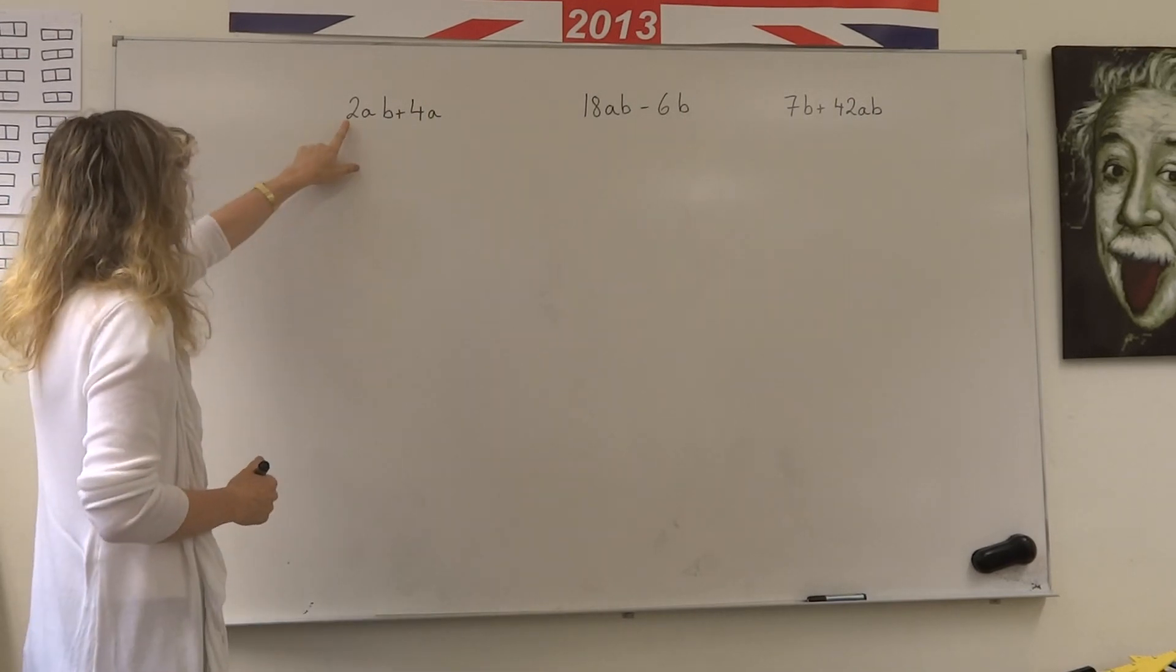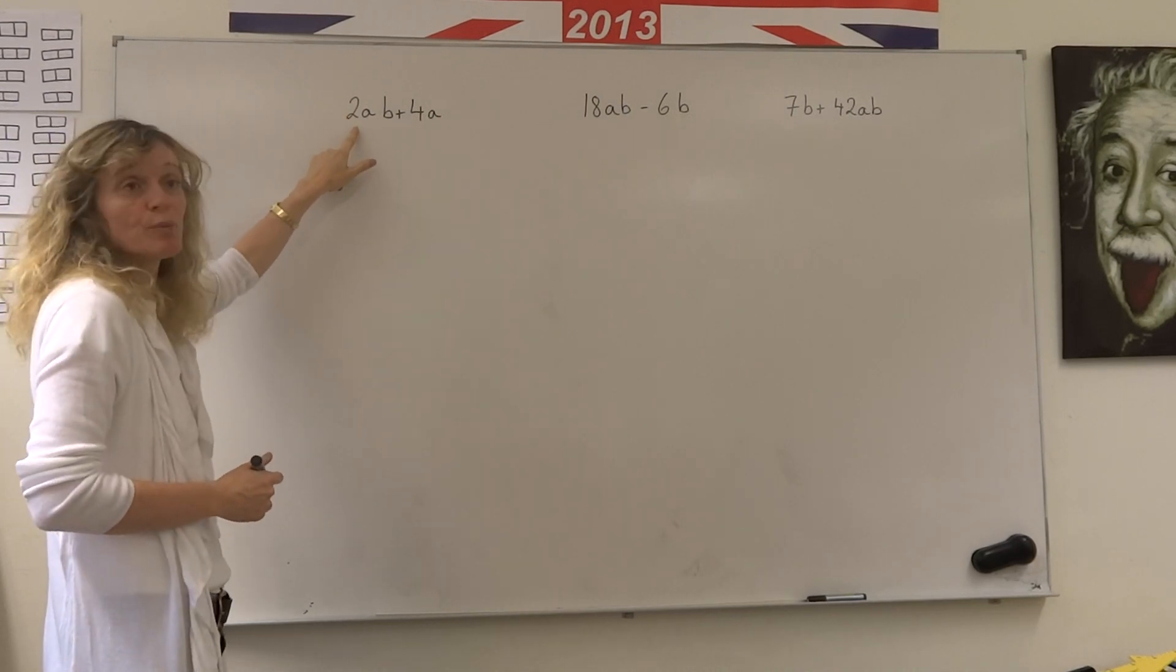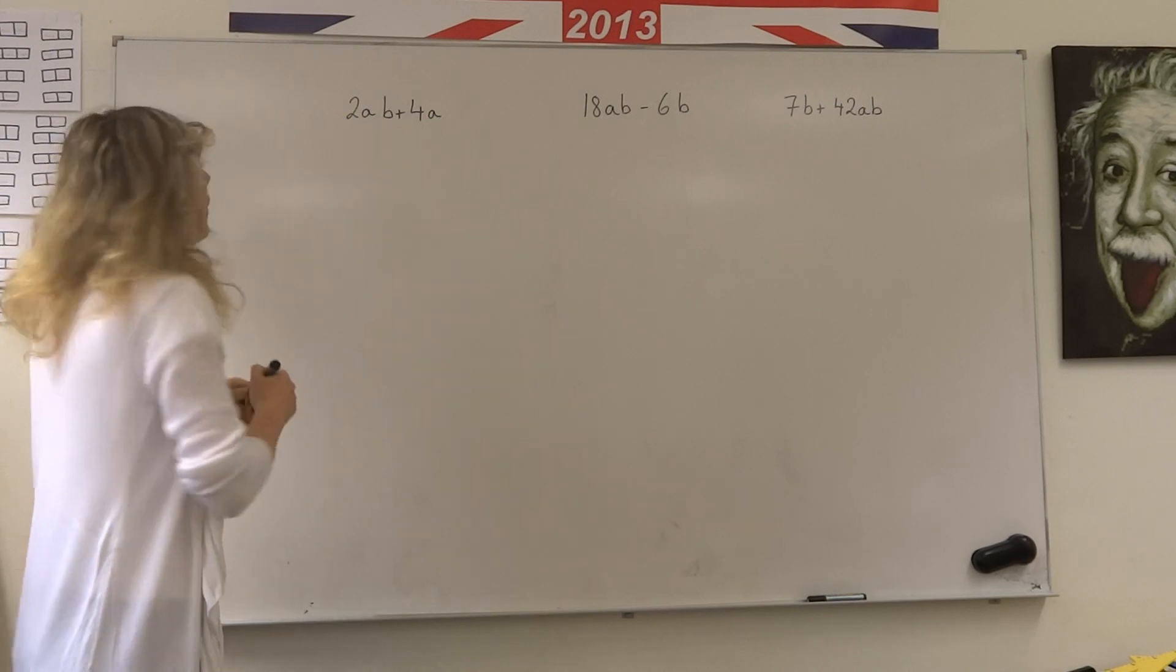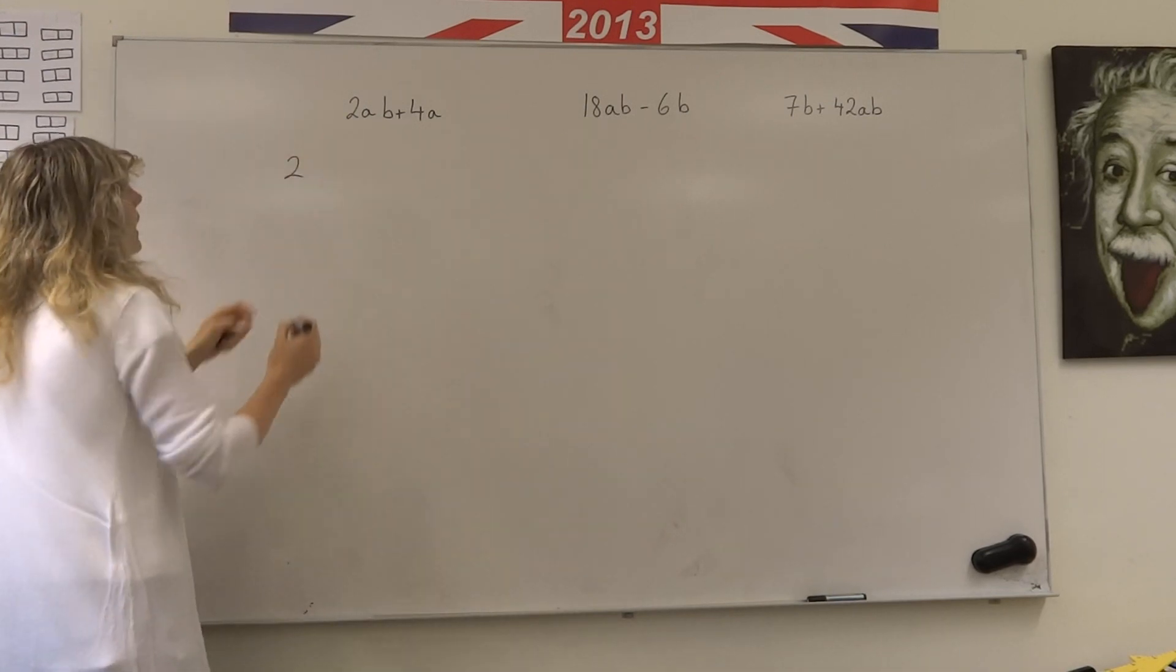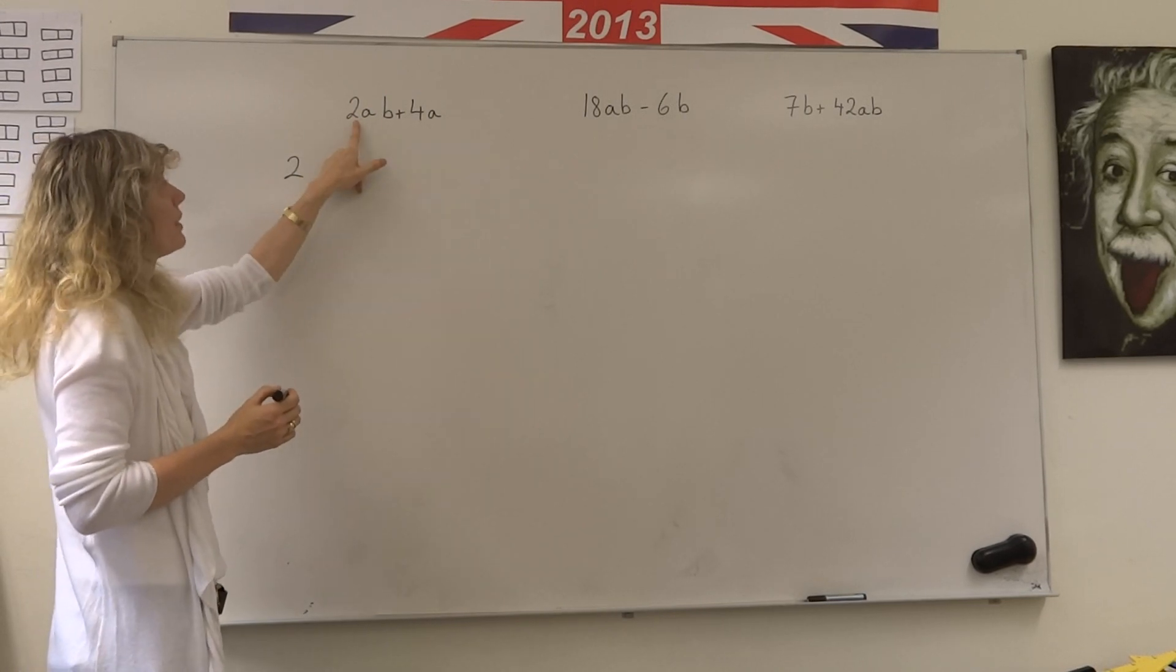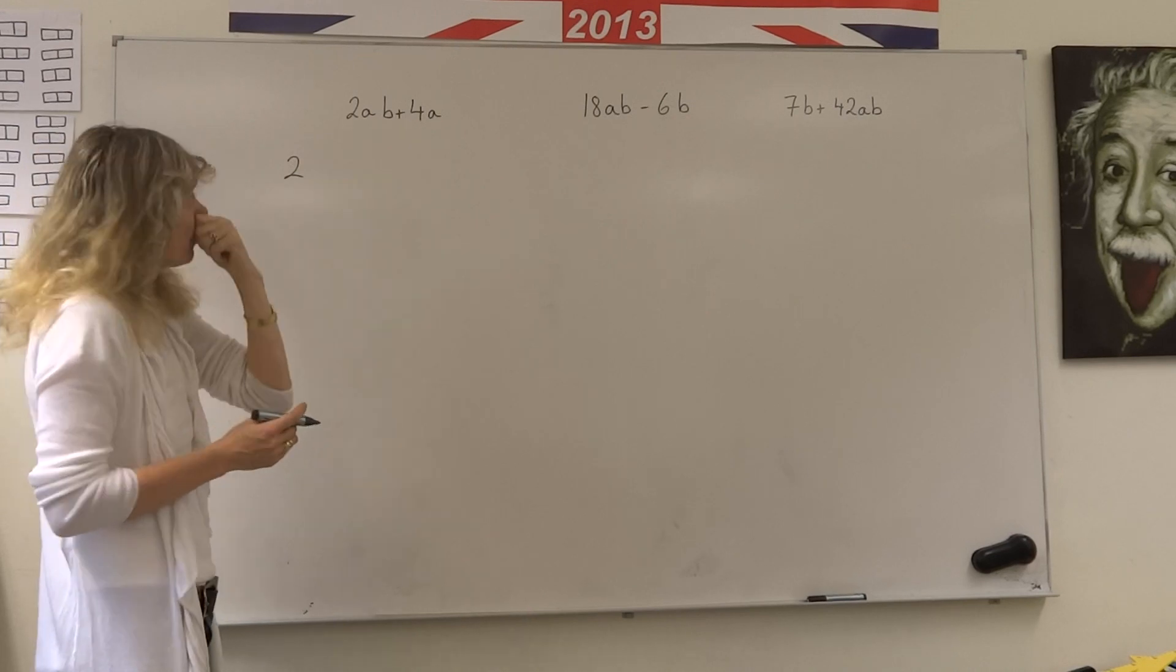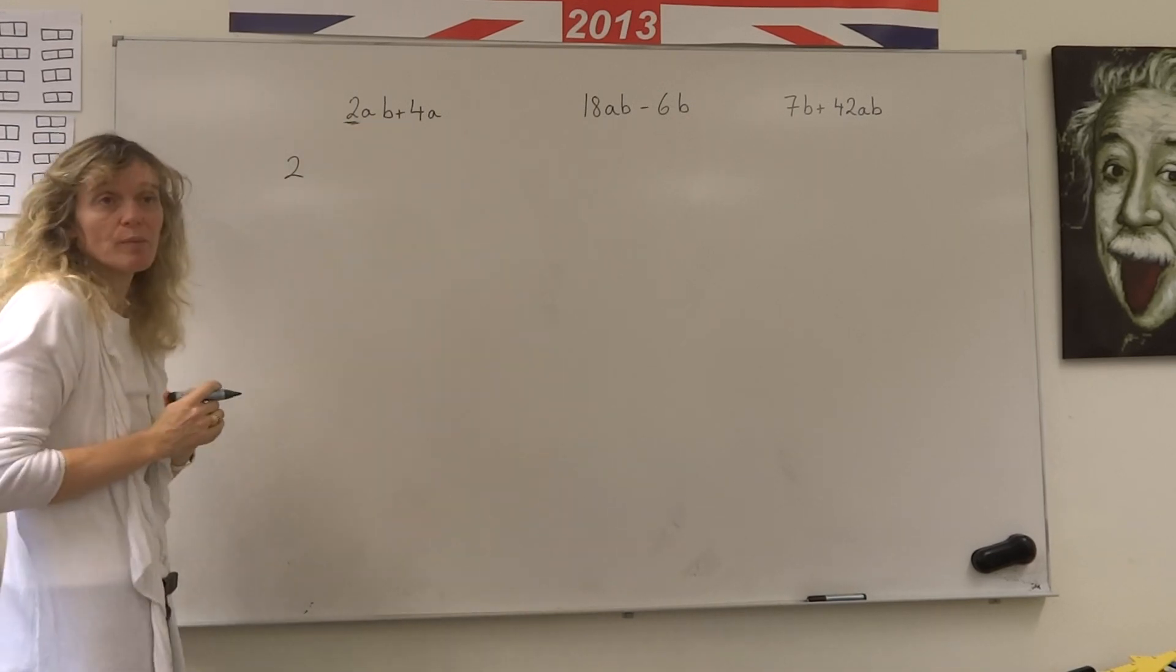If I look here, 2 and 4, the highest number that is common to both of them is 2. So I could have a 2 outside the front here and the 2 in here would disappear. It would be 2 times AB. So that's the number that I have common to both of them here.